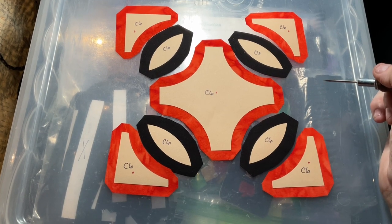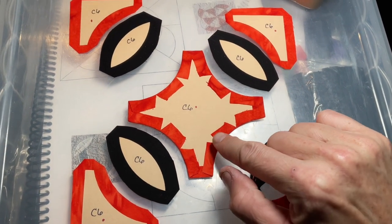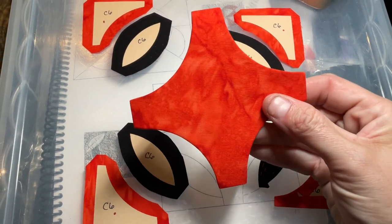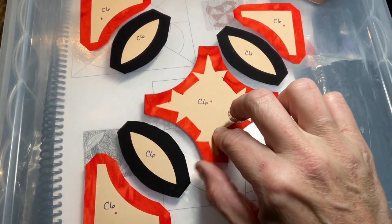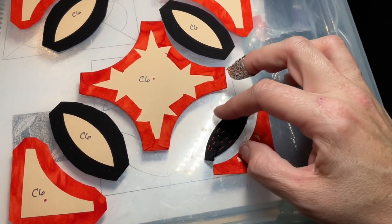Got the center basted. I've used two notches on each side, so this is what it should look like. And I've basted these two corner pieces. Next thing I'm going to do...